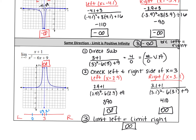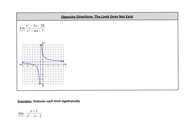What happens if the limit from the left does not equal the limit from the right? That leads to example number three — the limit as x approaches negative 1. Looking at the graph, at x equals negative 1 the limit from the right is going up to infinity, while the limit from the left is going down to negative infinity. Since the limit from the left does not equal the limit from the right, the answer is does not exist. We need to prove that algebraically.